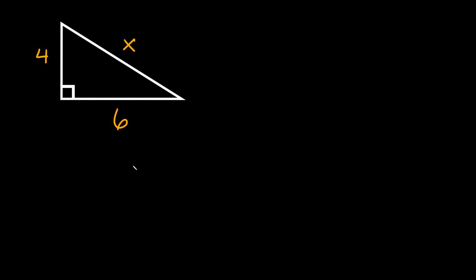What's up you freaking geniuses? In this video I'm going to teach you how to find the length of a missing side of a right triangle, and I'm also going to show you how to express your answer in simplest radical form. So here we have our right triangle. We know the two shorter legs — this short leg and this long leg — and we don't know the hypotenuse, which is labeled as x.